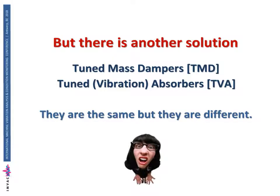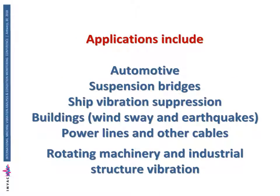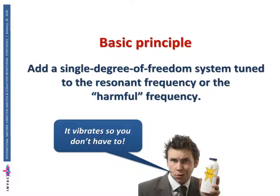Tuned mass dampers and tuned vibration absorbers are very similar but there is a difference. These devices are used in all sorts of applications — you've probably got some in your car and didn't know it. They're used in suspension bridges, ships (particularly in military applications to reduce noise), buildings to counteract sway due to wind and earthquakes, power lines, rotating machinery, and more. The basic idea is to take a single degree of freedom system — a spring, mass, and probably a damper — and add it to the structure so that the structure no longer vibrates, or vibrates at a much lower amplitude at that frequency.